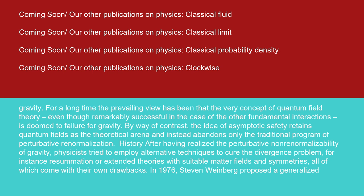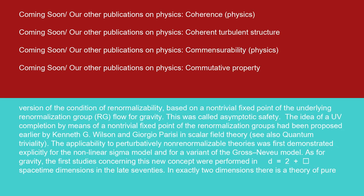History: after having realized the perturbative non-renormalizability of gravity, physicists tried to employ alternative techniques to cure the divergence problem. For instance, resummation or extended theories with suitable matter fields and symmetries, all of which come with their own drawbacks. In 1976, Steven Weinberg proposed a generalized version of the condition of renormalizability based on a non-trivial fixed point of the underlying renormalization group RG flow for gravity. This was called asymptotic safety.